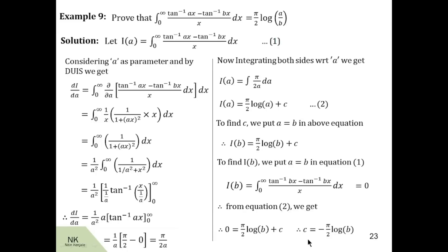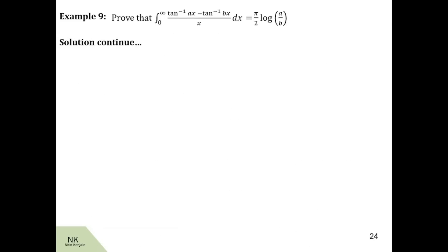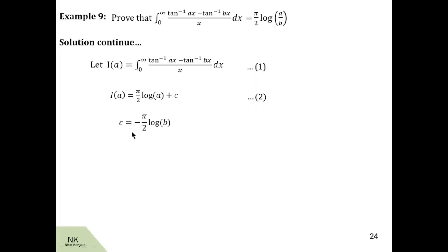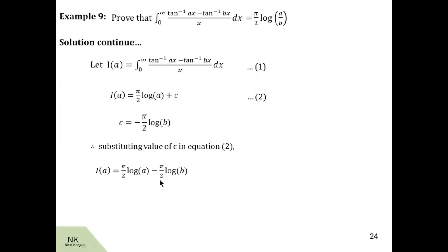Substituting the value of c into equation number 2, we get i of a equal to pi by 2 log a minus pi by 2 log b. Taking pi by 2 as a common factor, we get pi by 2 times log a minus log b, which is pi by 2 times log of a by b. So i of a, that is the value of this integral, is pi by 2 into log of a by b, which is the required RHS. Hence proved.